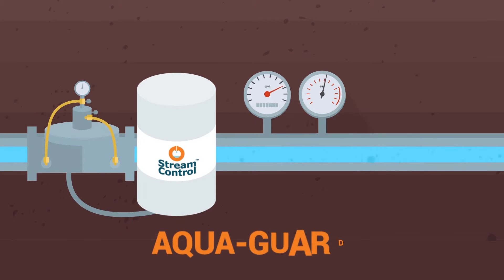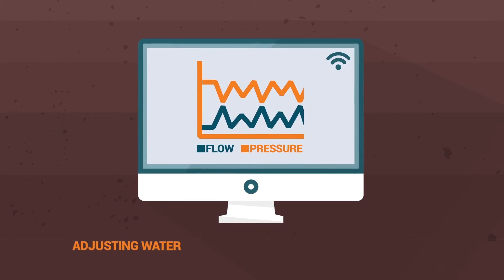StreamControl developed AquaGuard, a revolutionary controller that makes dynamic pressure management a reality by adjusting water pressure according to actual demand.